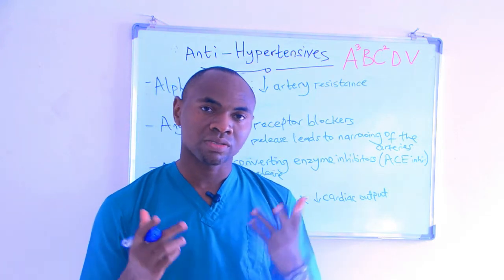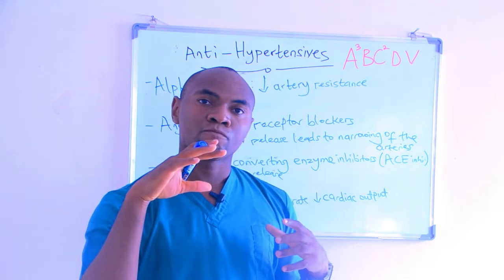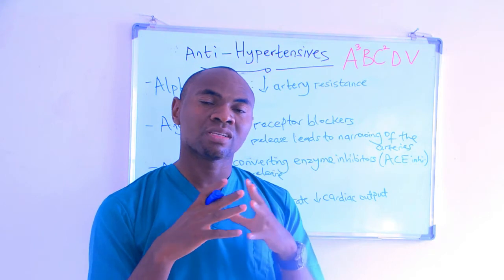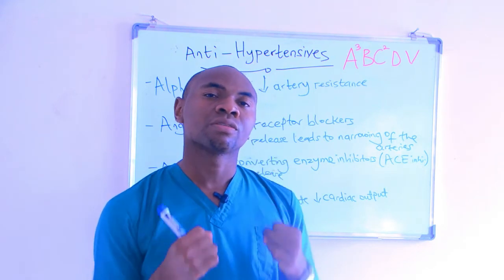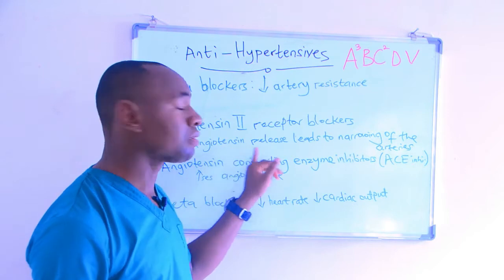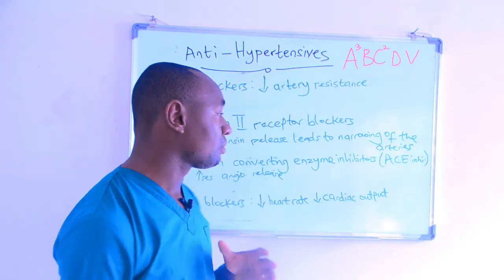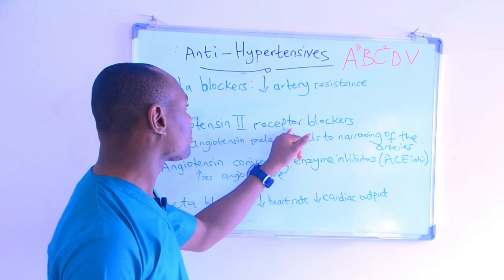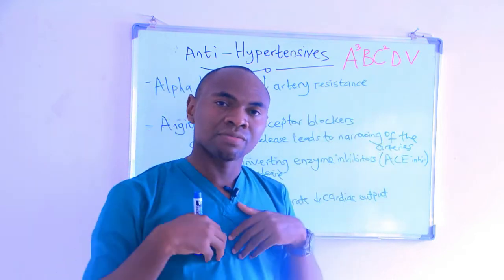The second A stands for angiotensin 2 receptor blockers. Angiotensin is a substance released into the bloodstream that acts on the kidneys and causes generalized vessel constriction — the blood vessels become narrowed and the pressure in the blood vessels increases, leading to hypertension. So angiotensin leads to narrowing of the arteries.